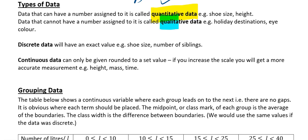The next one is what's called qualitative data. Qualitative data is data which you have to describe in words — so things like holiday destinations, eye colour, and maybe strength of feeling, all of these sorts of things.